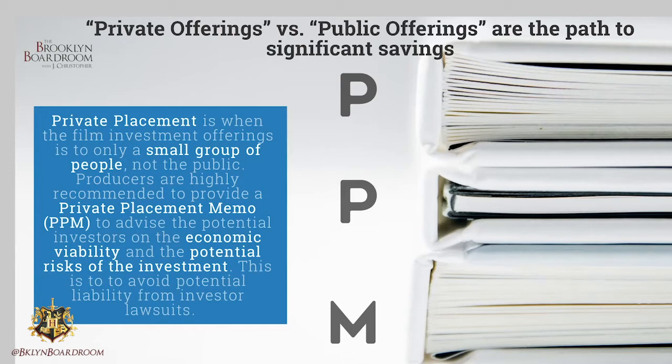You need to look for which private placement — private offering exception you can qualify for. When you make the offering, it's called a private placement offering because it's not public, and if it's going to be private, it has to qualify for one of a number of private placement exceptions to registering as a public offering. As part of creating that private placement offering, you have to create what's called a private placement memo, advising your investors of the potential risk, the economic viability, and the likelihood that they will not receive the return on their investment.